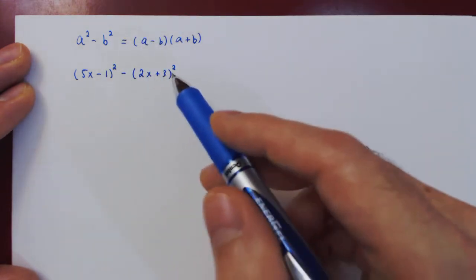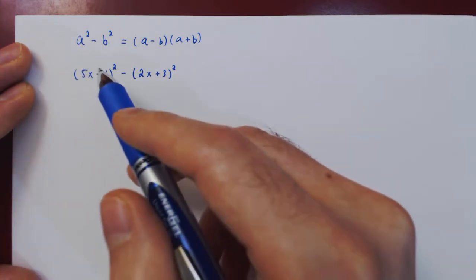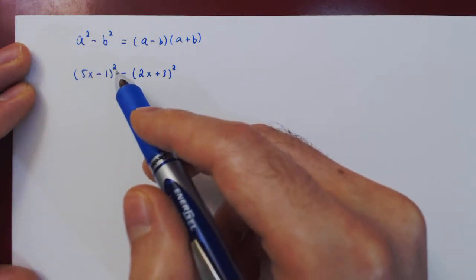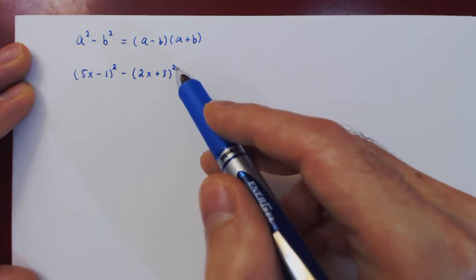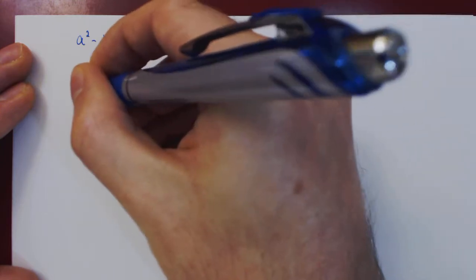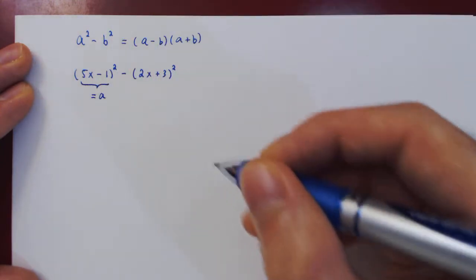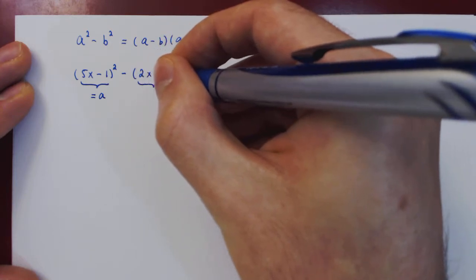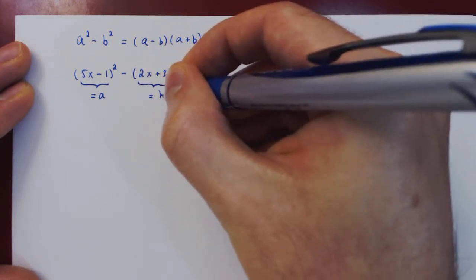But this is way too much work, as we can notice that we have something squared minus something else squared, so we have a difference of squares, where the first term, 5x minus 1, is a, and the second term, 2x plus 3, is b.